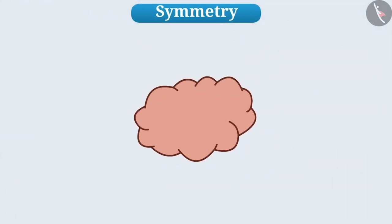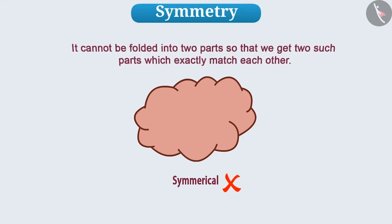Now, look at this shape. Is this shape symmetrical? Give it a thought. Absolutely right! It is not a symmetric shape. This is because we cannot in any way bend it into two parts so that we get two such parts which exactly match each other.